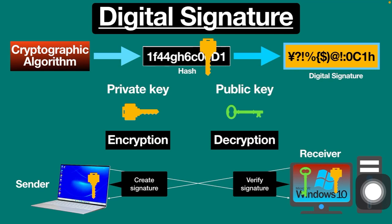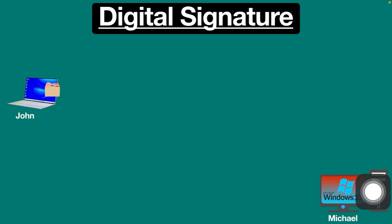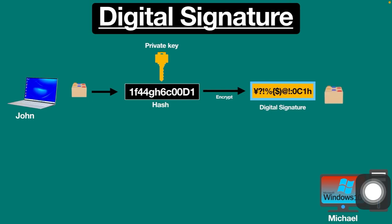Let's take an example for a better understanding. Say John has to digitally sign a document and send it to Michael. First, he selects the document he wants to digitally sign. Then the hash of the document is calculated by the cryptographic algorithm. This hash is then encrypted with John's private key to create the digital signature.